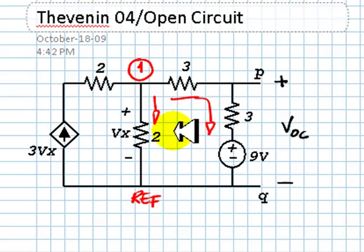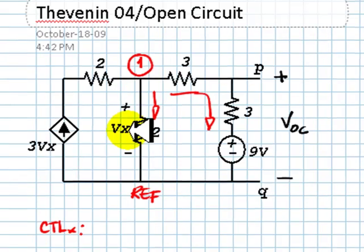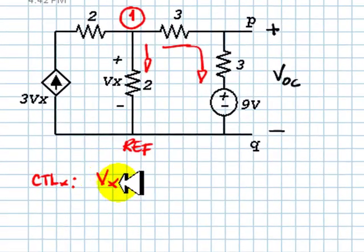There is one controlling variable Vx, and we write that controlling equation, CTL for variable Vx. Vx in terms of node voltages is just V1. That is our equation.